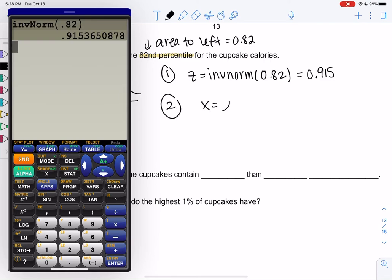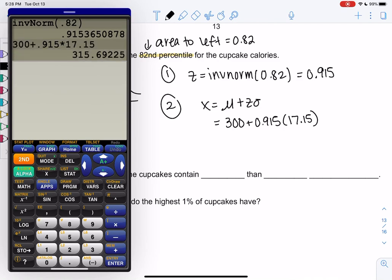De-standardize. Oh, sorry. My dog made me do that. X equals mu plus z sigma. And we get 300, that was our mean, plus 0.915 times the standard deviation of 17.15. We'll plug it in, and then we'll take a break because my dog is barking. 315.7.